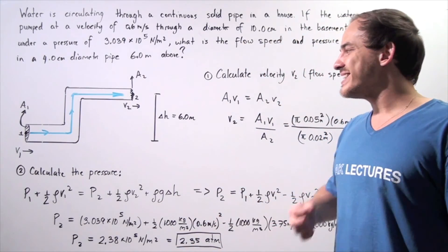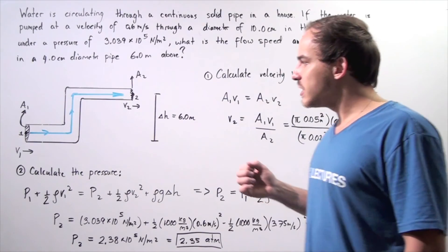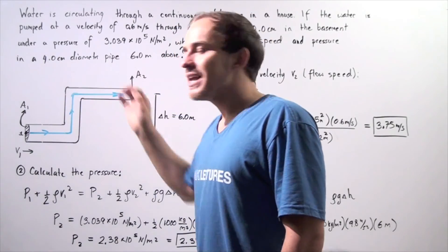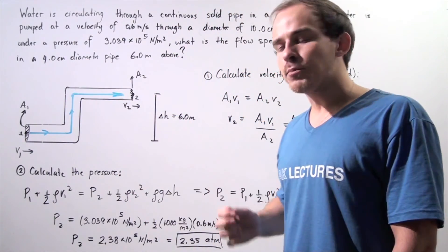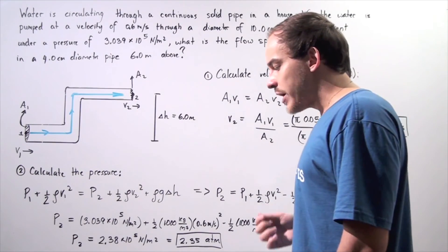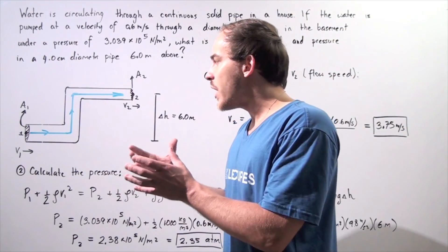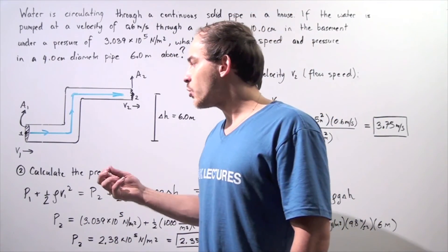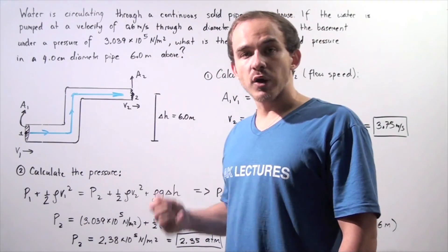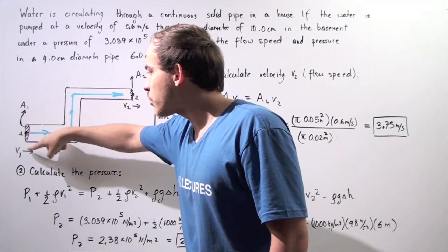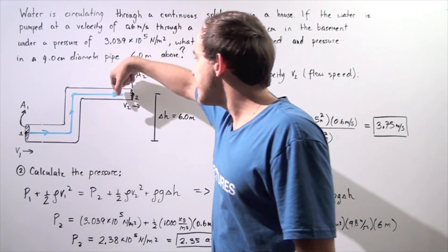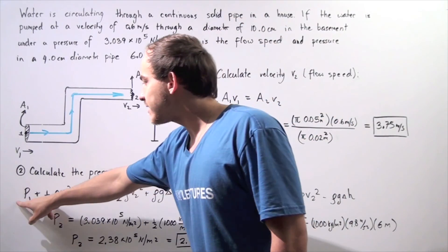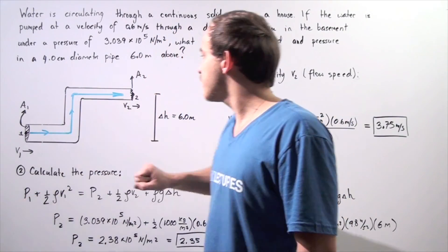This pressure is slightly less than the pressure in the basement, because the velocity in the upper section is higher. Bernoulli's equation states that where you have a greater velocity you have a smaller pressure, and where you have a smaller velocity you have a greater pressure. So the basement pipe has greater pressure and the upper pipe has less pressure because its velocity is greater. That is exactly why P1 is greater than P2.